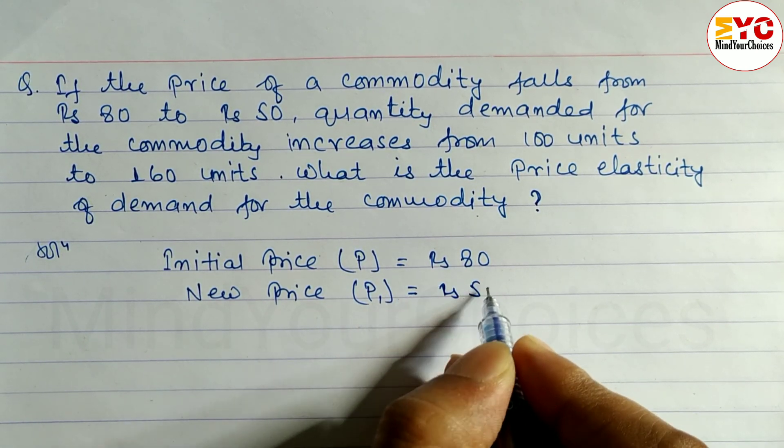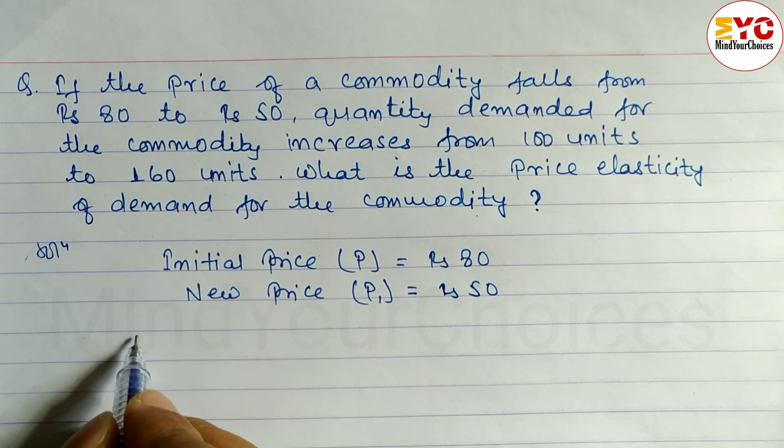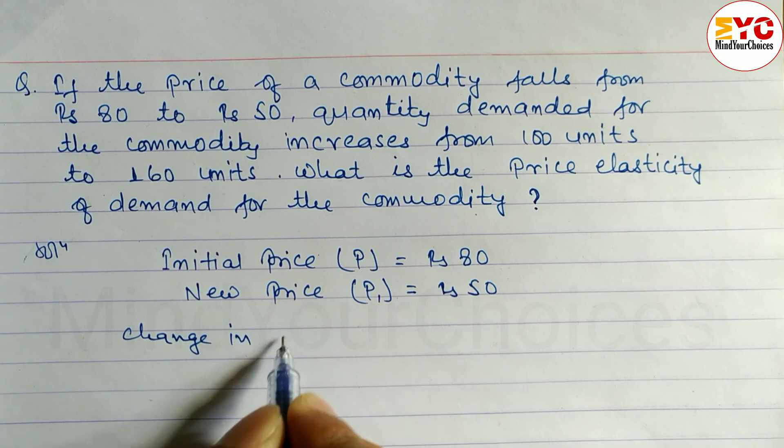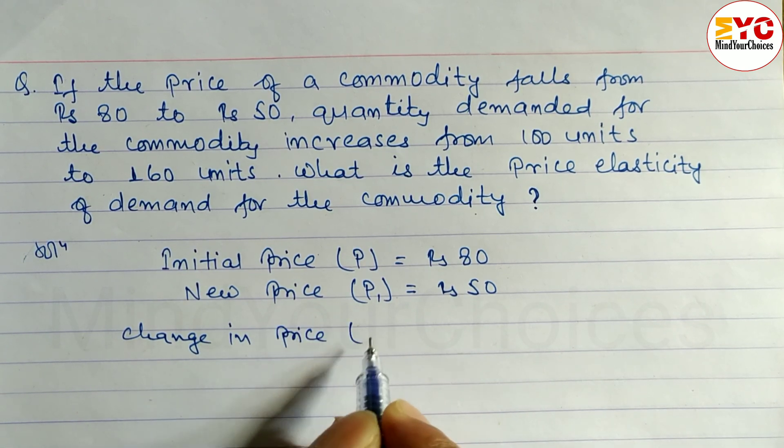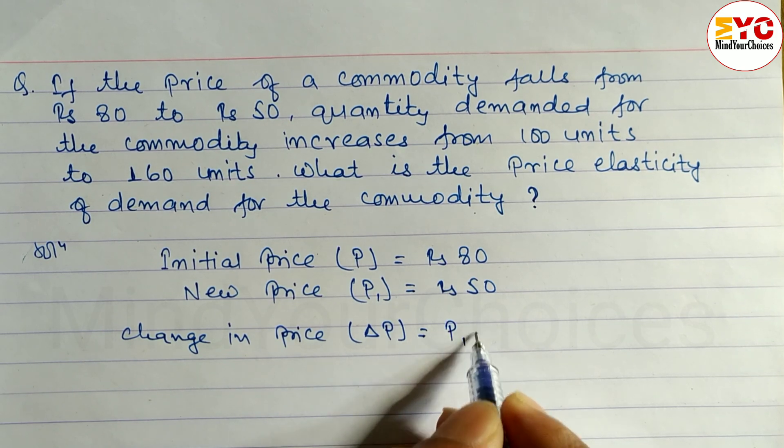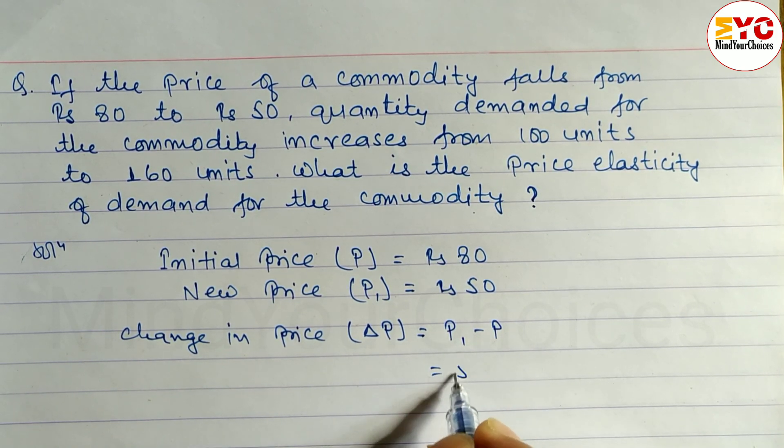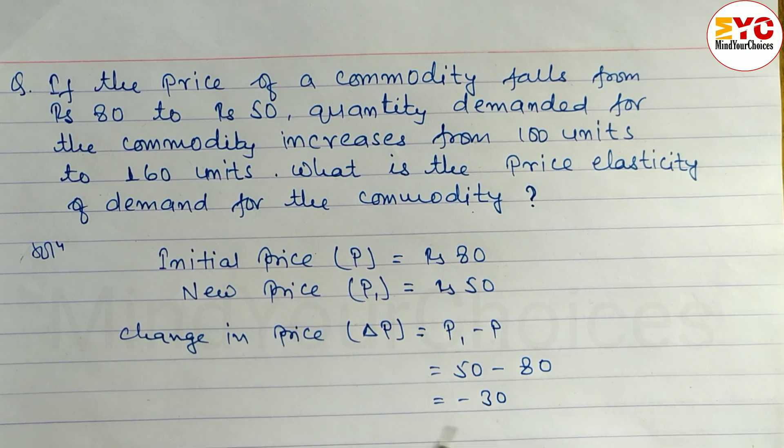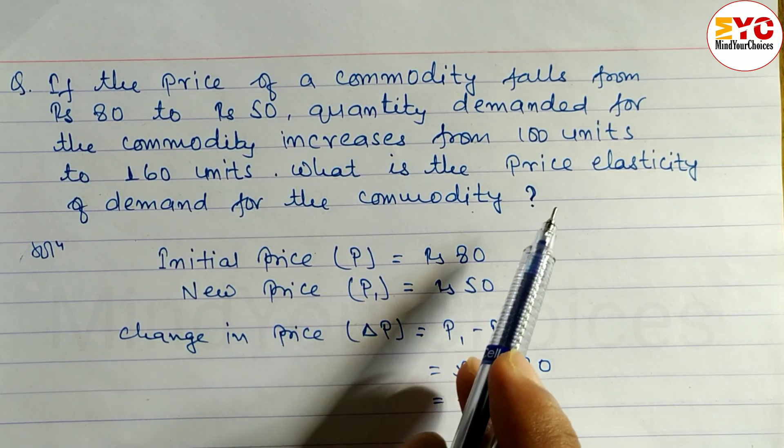Change in price, which is denoted by ΔP, the formula is P1 minus P. So 50 minus 80, which is equal to minus 30.